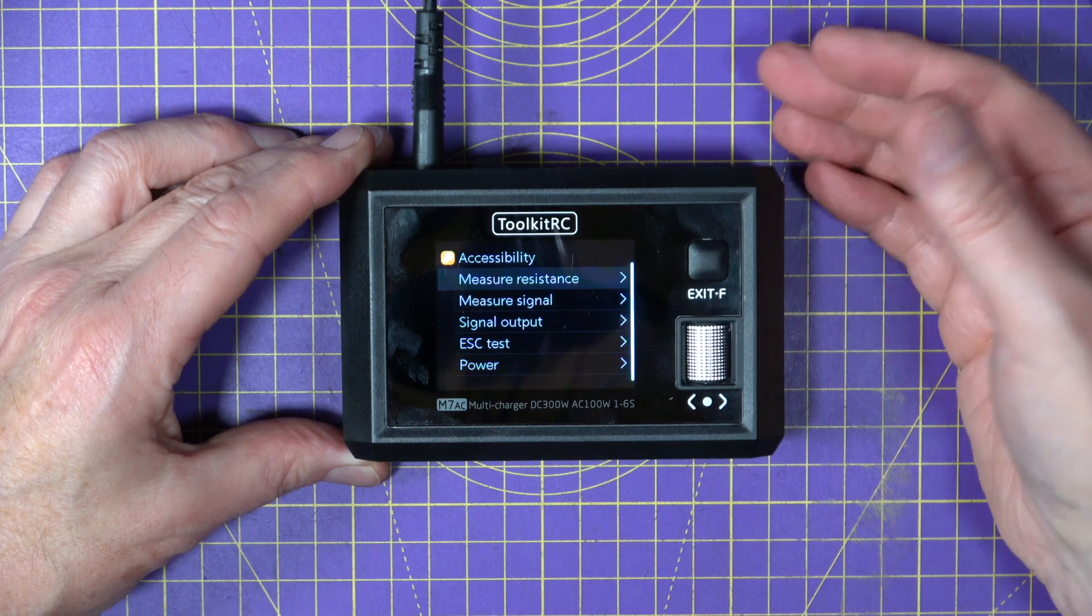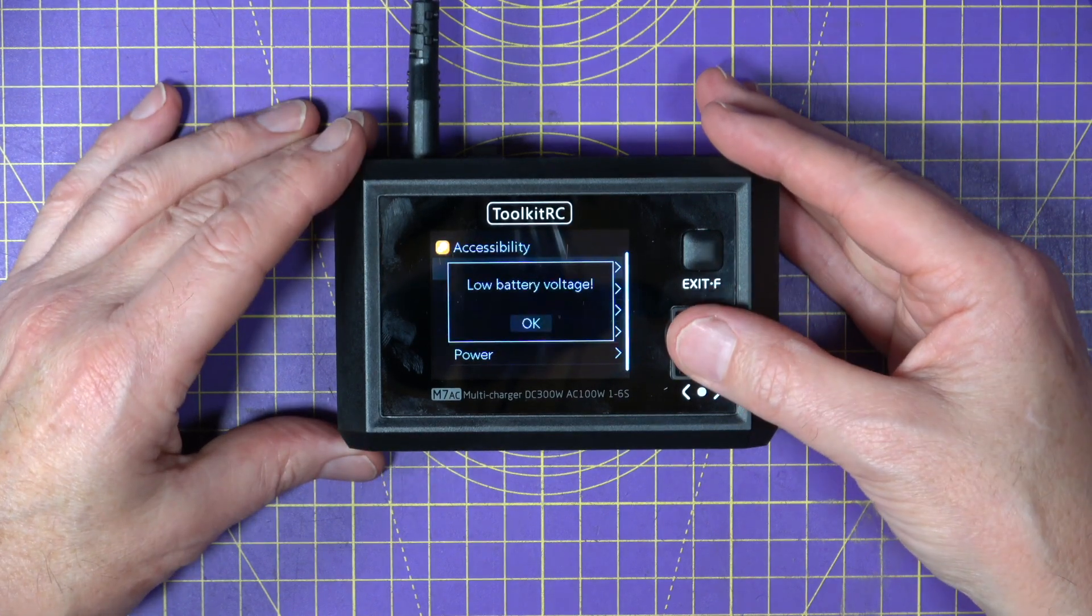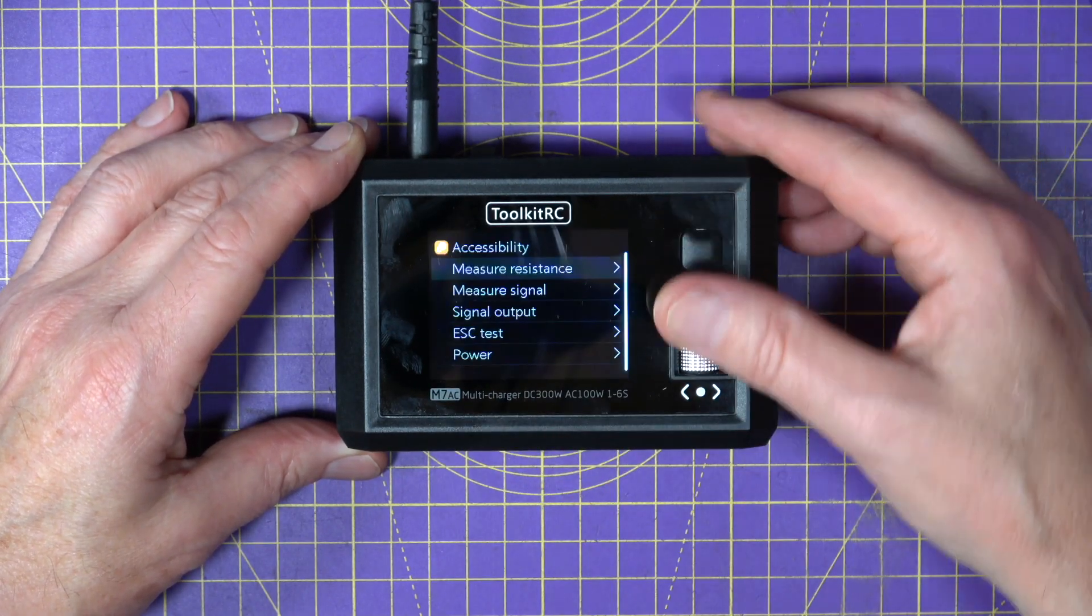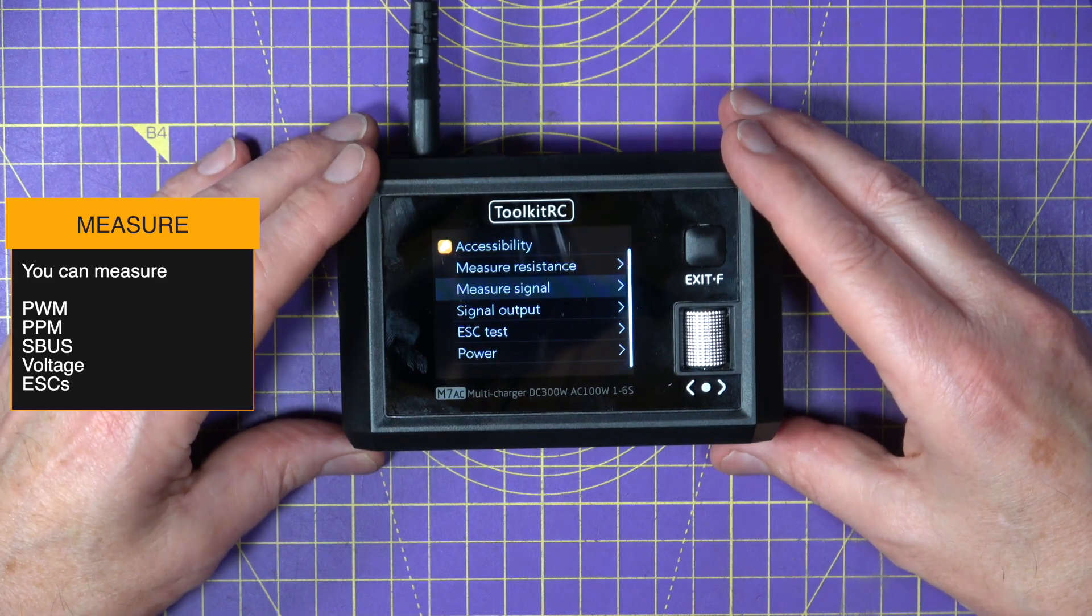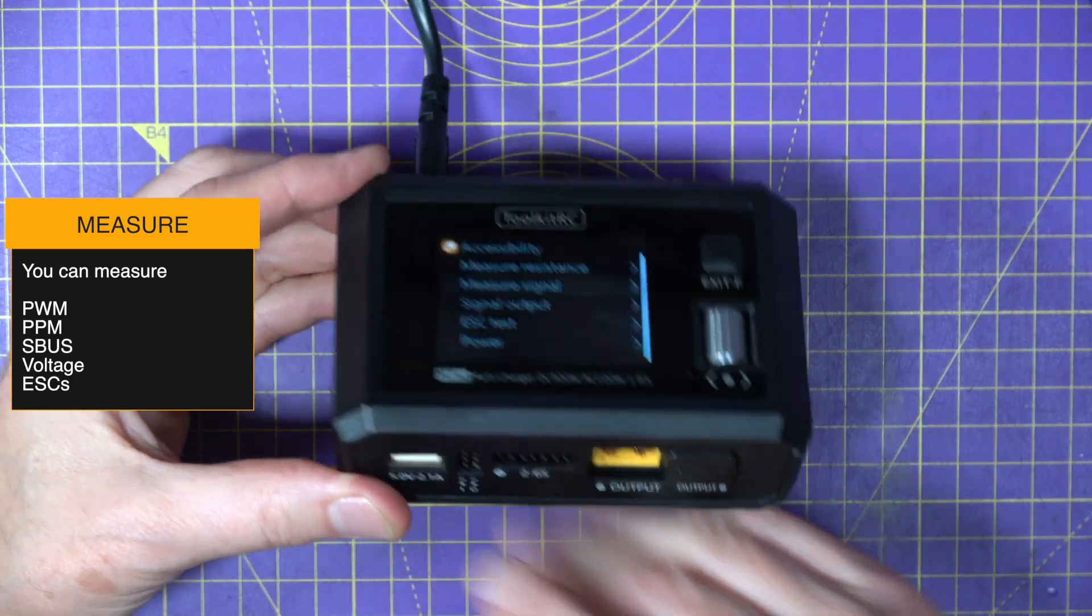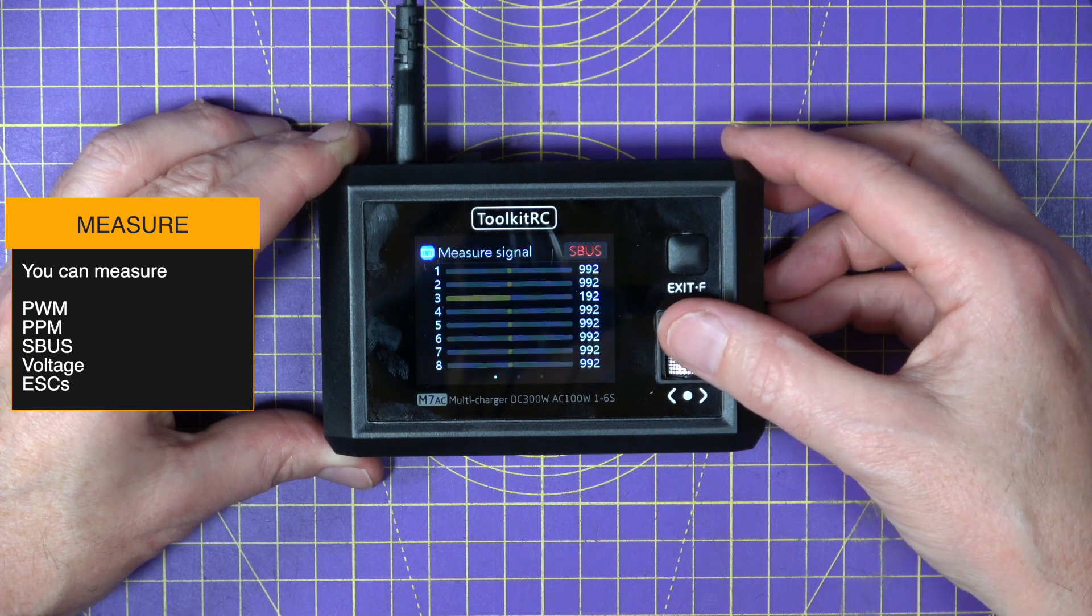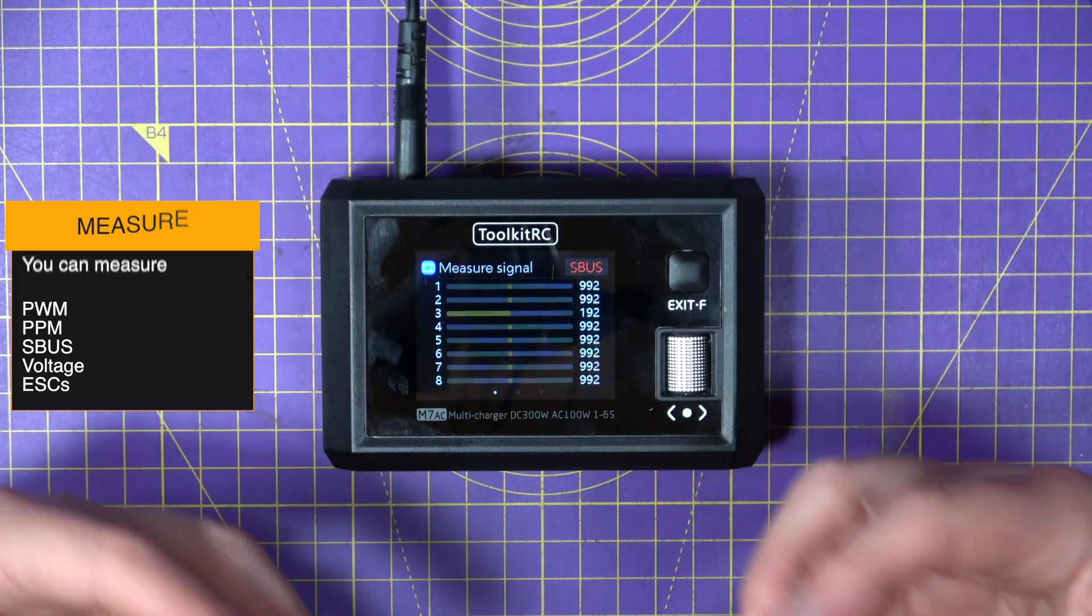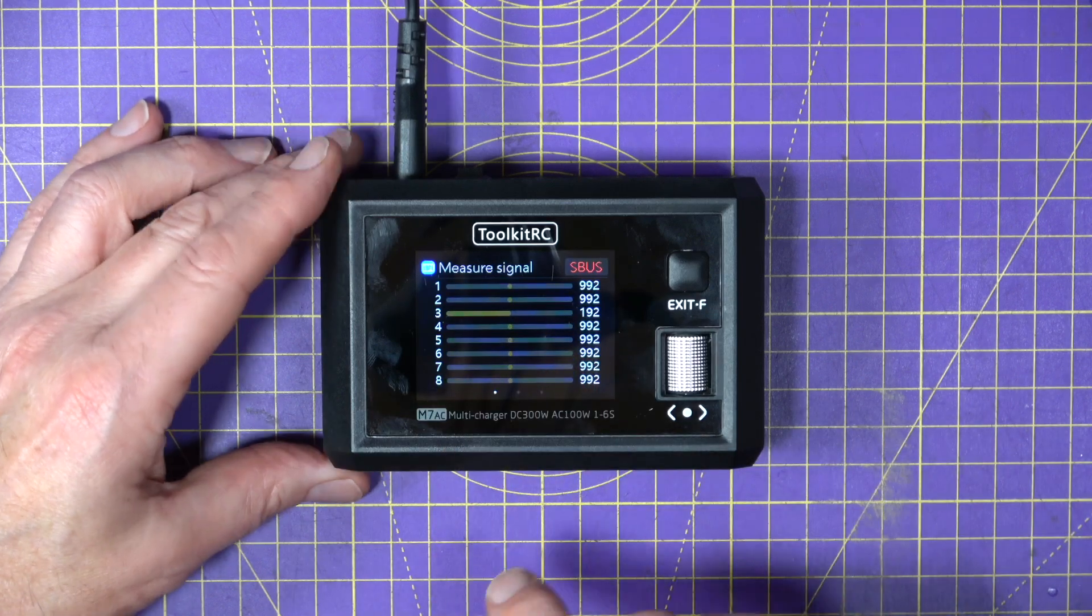Now what you can do is if you long press the exit button you get to a different set of menus and this is test mode and signal generator mode. So I've got no battery connected but that's just going to measure the internal resistance which you could have done anyway when you're charging. So if we wanted to measure a signal, so say we had an S bus receiver and we wanted to check that it was actually generating an S bus signal, if you take that receiver and plug it into here using a servo lead and you go into measure signal we can choose PWM, PPM or S bus.